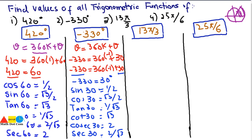The next angle is in radians. For radians, the coterminal angle formula is θ = 2πk + θ, since one full revolution equals 2π radians rather than 360°. The given angle is 13π/3.